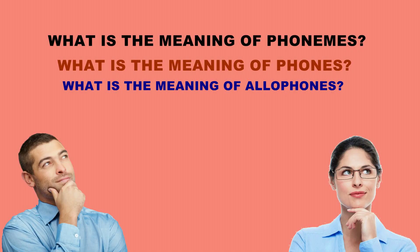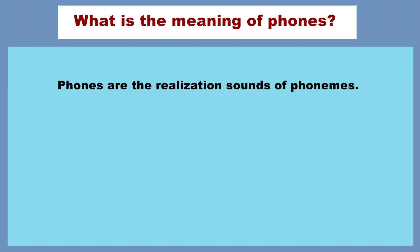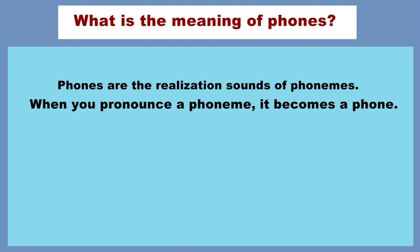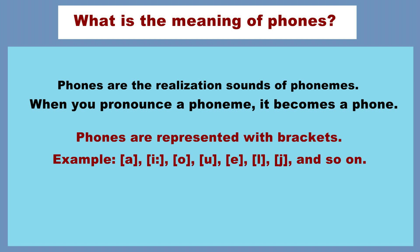The next thing I'm going to explain is about phones. Phones refer to the instances of phonemes in actual utterances — they are the realized sounds of phonemes. When you pronounce a phoneme, it becomes a phone. Phones are represented with brackets.